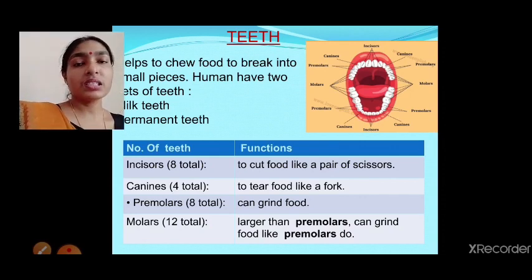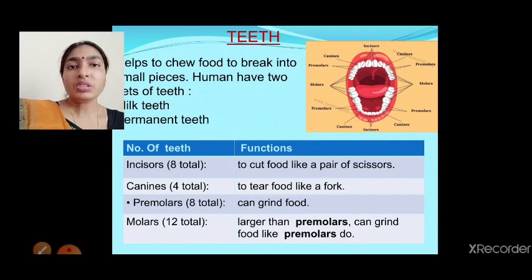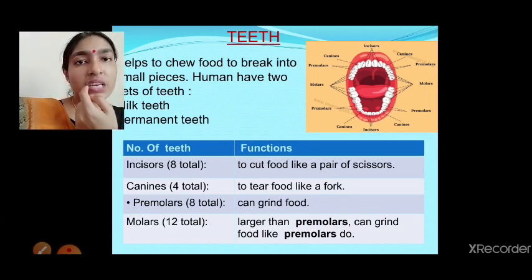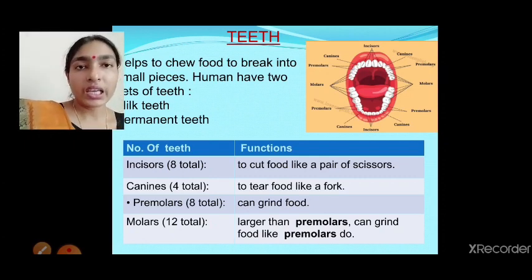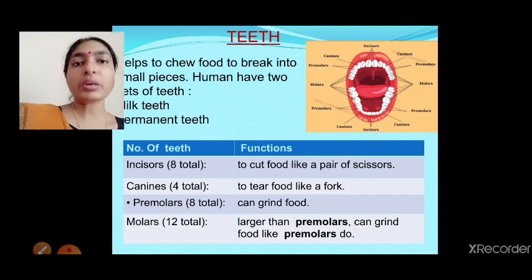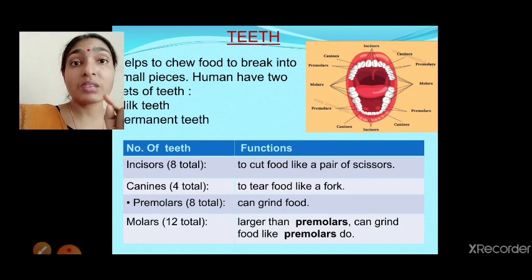Just as scissors are used for cutting, incisors function the same way — they cut food items and are used for biting. After the incisors come the canines — one on each side in both upper and lower jaw, totaling four. Canines help to tear food. In carnivorous animals like tigers and lions that tear flesh, the canine teeth are very sharp and long.